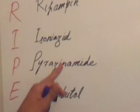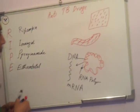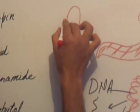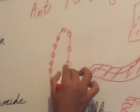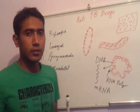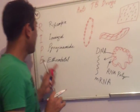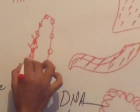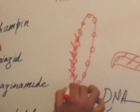The mechanism of action of isoniazid and pyrazinamide is the same. The cell wall of Mycobacterium tuberculosis is made up of mycolic acid. All other bacterial cell walls are made of peptidoglycan, but the TB bacterial cell wall is made of mycolic acid, which is a fatty acid molecule. Isoniazid and pyrazinamide both inhibit mycolic acid synthesis.